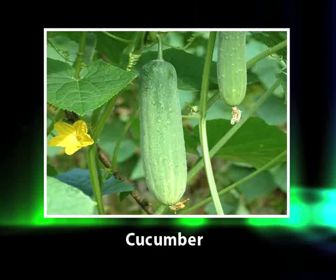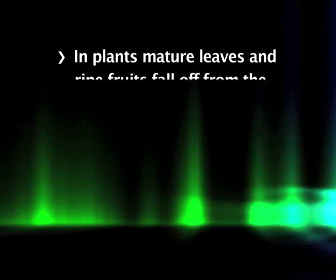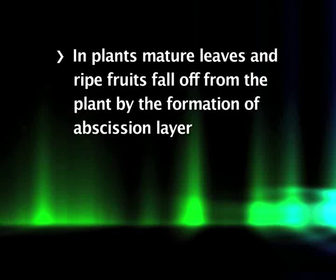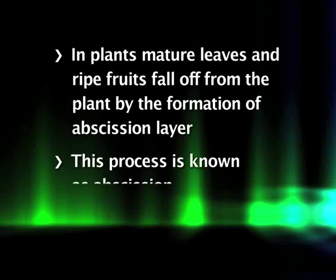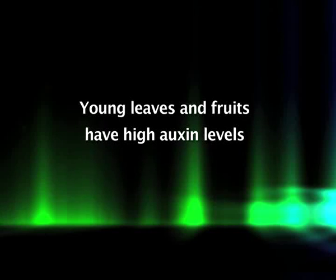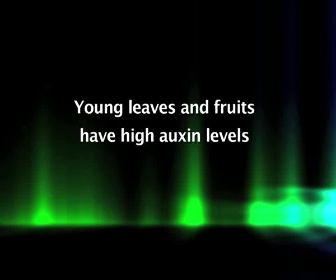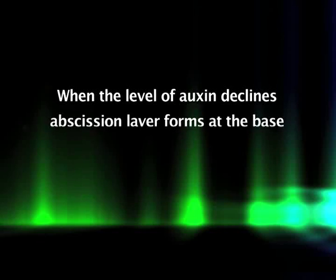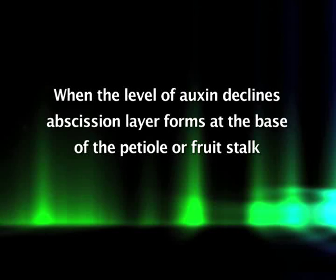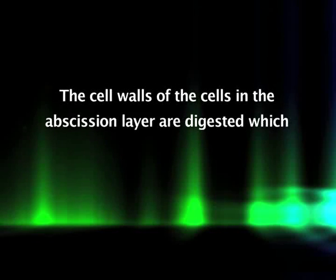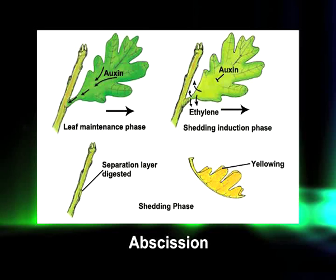In plants, mature leaves and dry fruits fall from the plant by a process known as abscission. These parts abscise by the formation of an abscission layer in the abscission zone, located at the base of the petiole or fruit stalk. Young leaves and fruits have high auxin levels, and as long as they do, they remain attached to the stem. When auxin levels decline, a special layer of cells called the abscission layer forms; the cell walls in this layer are digested, making them soft and weak, causing the petiole or fruit stalk to break free and the leaf or fruit to fall. Fruit growers often apply auxin spray to reduce premature fruit drop.